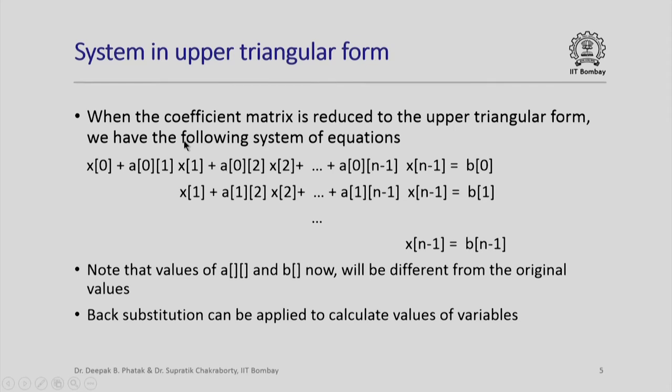When the coefficient matrix is reduced to an upper triangular form, we generally get the following system: x naught plus a naught 1 x 1 plus a naught 2 x 2 etcetera. The last row will be simply x n minus 1 equal to b n minus 1. Please note that the values of matrix A and B will now be different from the original values because lot of computations have gone while we transform the original system into this system. But the back substitution can be applied to calculate values of all the variables.